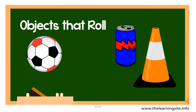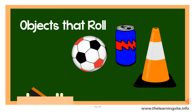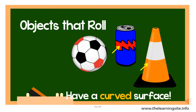Now look at those objects that roll. All of them can go round and round if you place them on their curved surface. A ball will always roll. A can of soda will roll if you place it on its side. And a cone will roll round itself. All curved surfaces can roll.